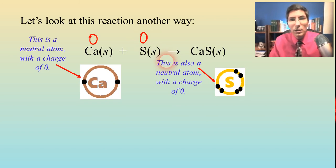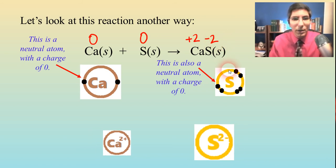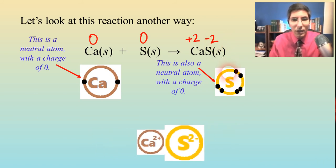Well, when they undergo that ionization, calcium gave electrons to sulfur. Calcium is no longer neutral. It's got a plus two charge. And the sulfur became a negatively charged anion. It had a negative two charge. So we have that reaction again.